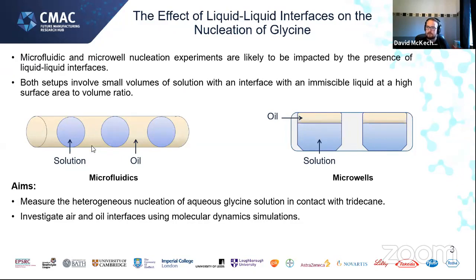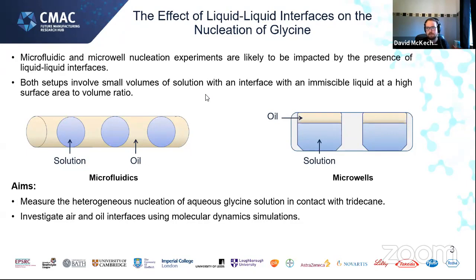In microfluidics, small volumes of solution are in contact with an immiscible oil that maintains the size and shape of droplets throughout the experiment. In microwells, the wells of a microplate are filled with solution and typically covered with oil to prevent evaporation. In both cases we have a small solution volume in contact with an interface with a very high surface area to volume ratio, meaning heterogeneous nucleation can dominate and data may not transfer to macroscale crystallizations where interfaces differ significantly.